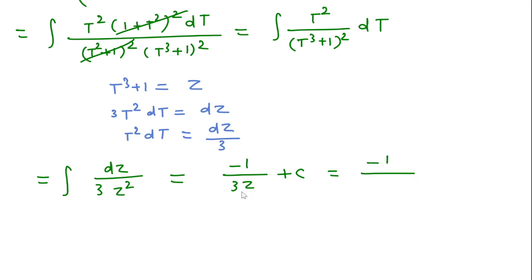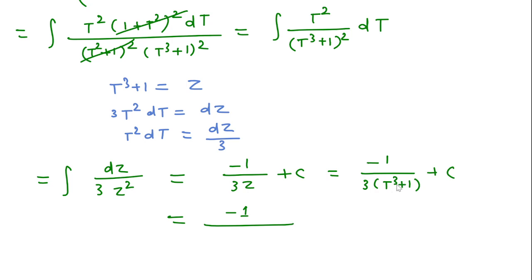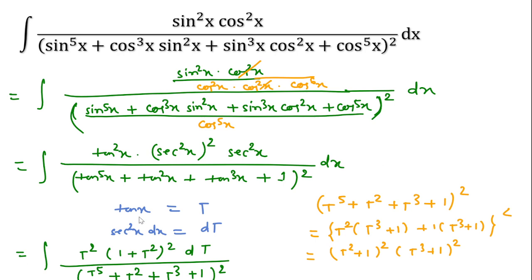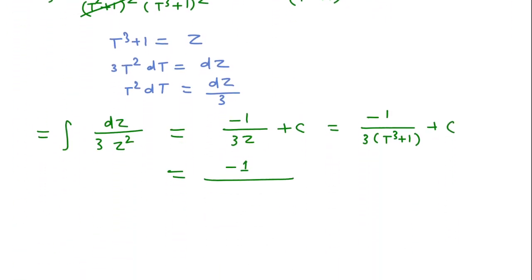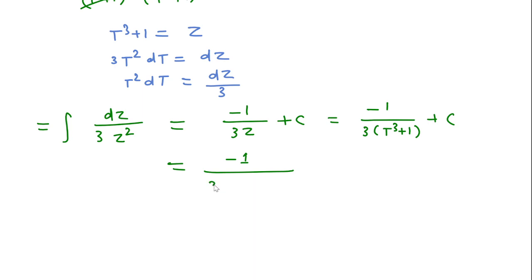We have already considered z as t³ plus 1, and t as tan x. So in place of z I will write tan³x plus 1, giving the required answer: minus 1 over 3(tan³x plus 1) plus C. Thanks for watching this video, and please like, share, and subscribe to this channel.